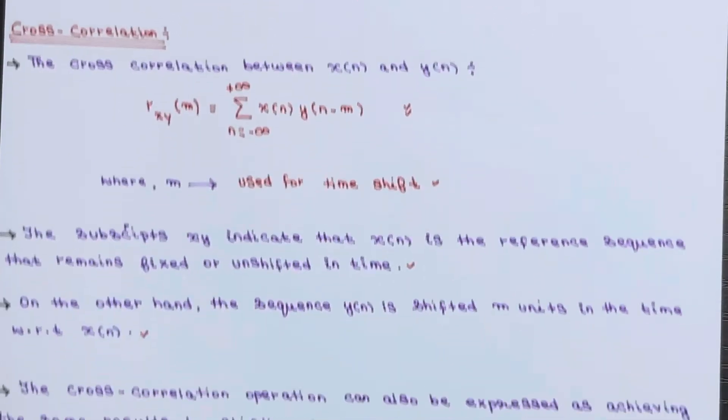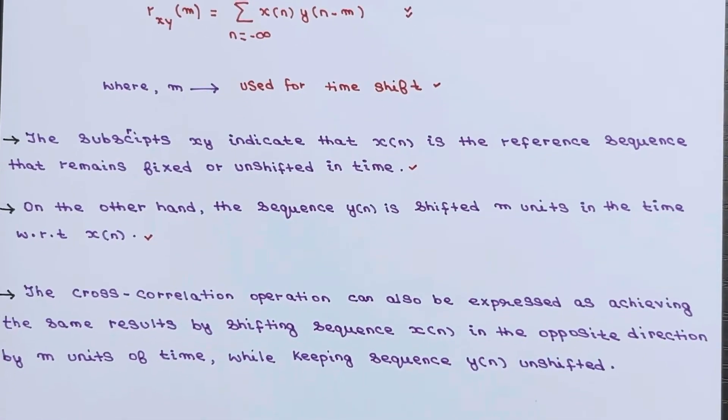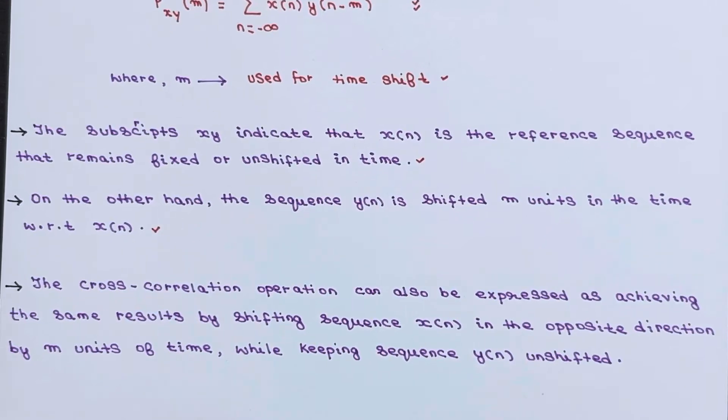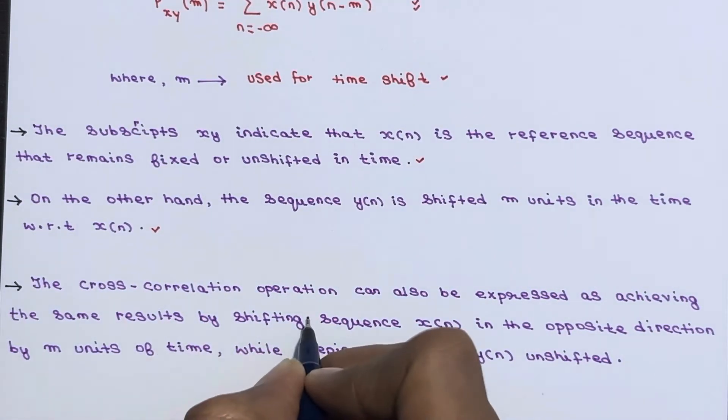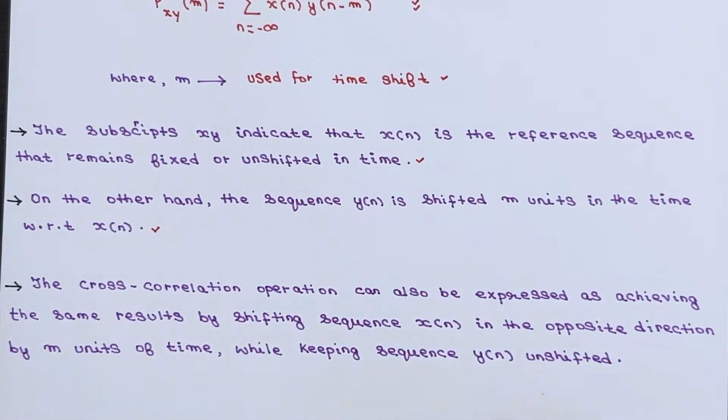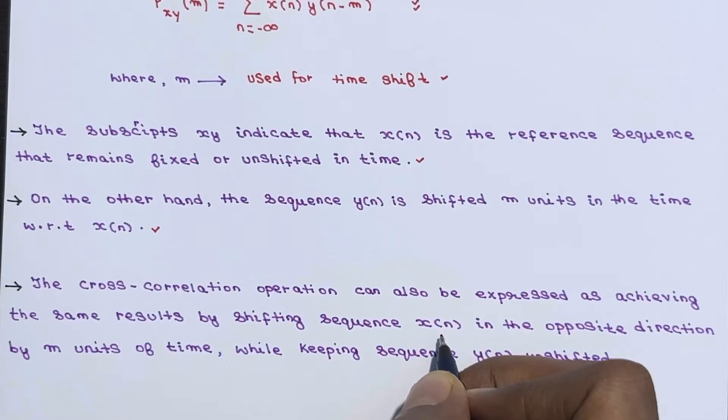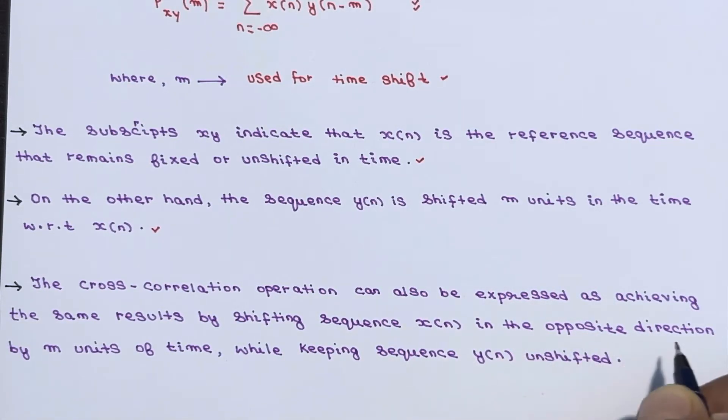Now let's go for the next. So basically the cross-correlation operation can also be expressed as achieving the same results by shifting the sequence of x of n. So this time we are going to shift the sequence x of n in the opposite direction by m units of time while keeping sequence y of n unshifted.